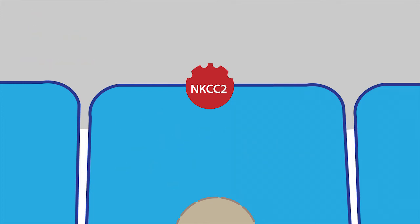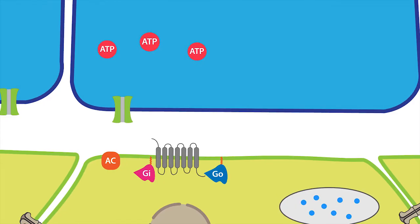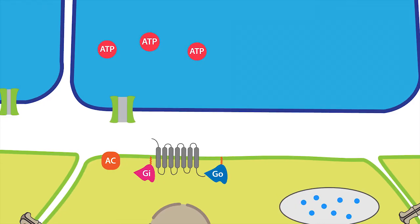This increase in intracellular sodium chloride triggers the release of ATP or adenosine triphosphate along the basolateral membrane via pannexin channels. Once ATP leaves the cell, it is quickly converted to AMP or adenosine monophosphate and then adenosine. Adenosine then binds the adenosine A1 receptor located on the extraglomerular mesangial cells. This in turn activates small G proteins.